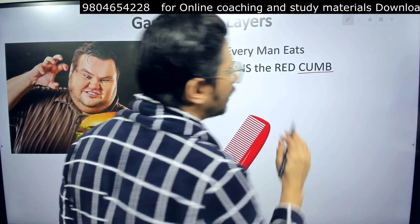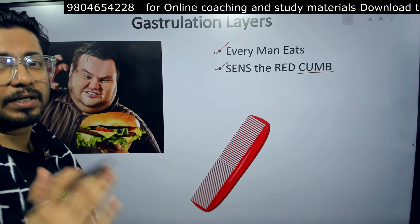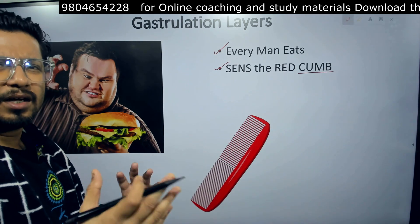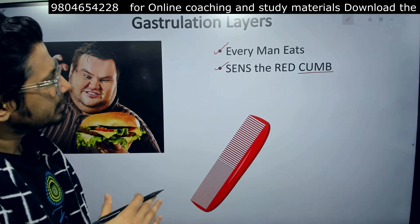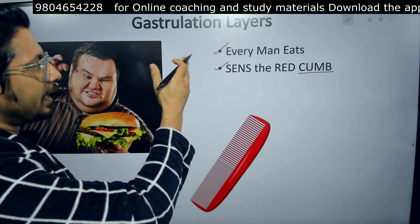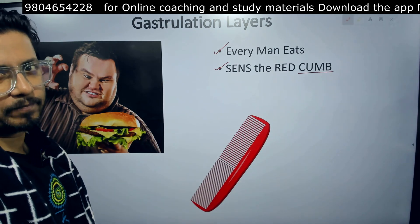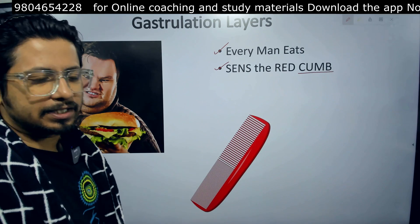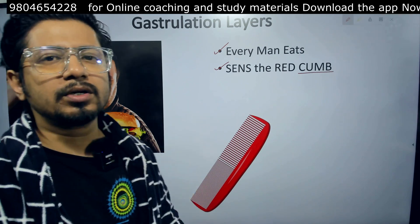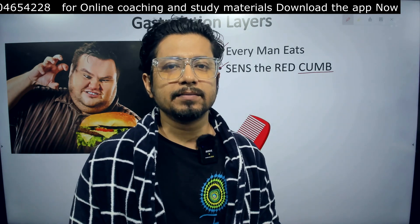Instead of 'comb,' our mnemonic word is C-U-M-B. 'Cumb' is homophonic with comb, so use this for that. So the phrases are 'sense the red cumb' and 'every man eats.' From these two sentences, we can understand not only the three germ layers, but also the different systems that are produced by these germ layers.